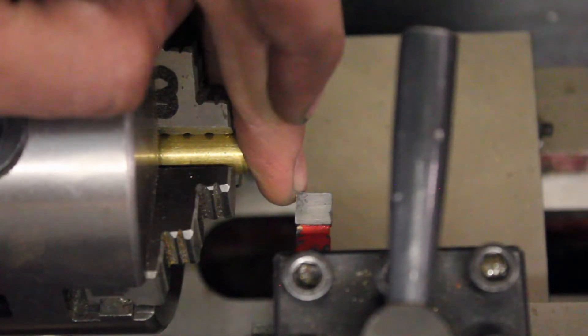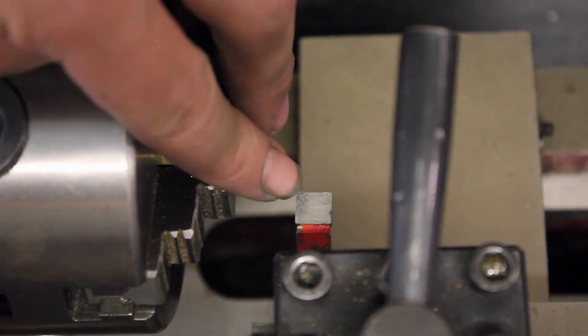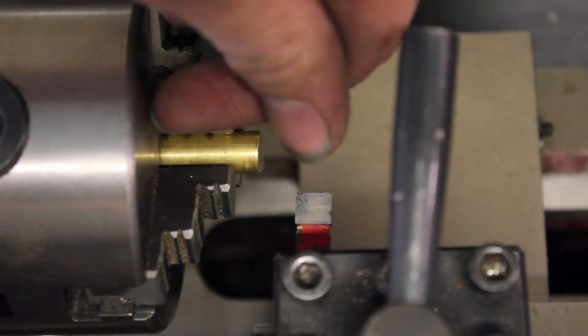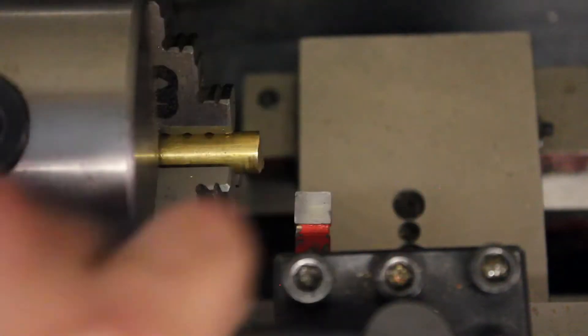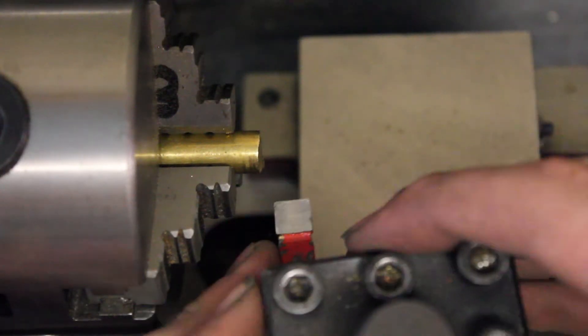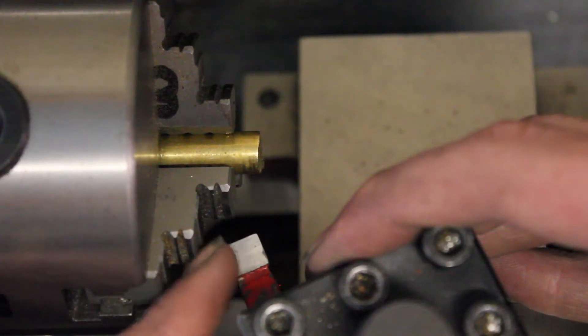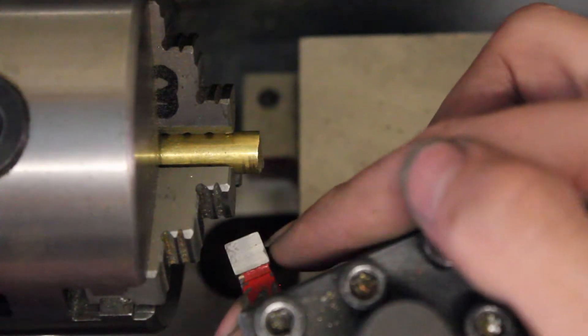So when you're facing off your part, you want the cutting edge to be forward most this way, more than any other part of your tool. So if you loosen up your tool post so that this will be able to rotate, you want to rotate it so that your cutting edge is in front of the rest of your tool.